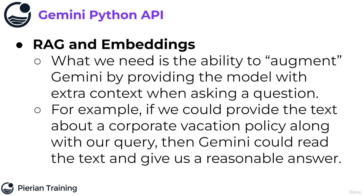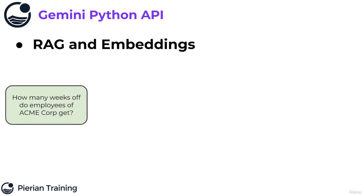What I need to do is augment Gemini by providing the model extra context when asking a question. For example, if I could actually provide the text about a corporate vacation policy along with our query, then Gemini could read that text and give us a reasonable answer. So if I just went with base Gemini and I asked it, how many weeks off do employees of Acme Core get, and I sent that over to Gemini.